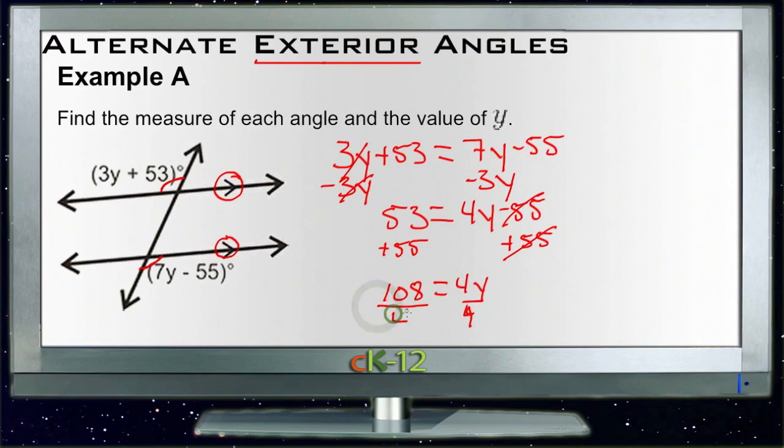So y needs to be 27, and that tells us that 3 times 27 plus 53 will be the measure of our top left-hand angle. So 81 and 53 would be 134.